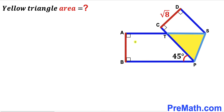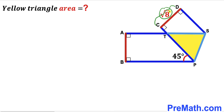Welcome to pre-math. In this video we have got a rectangle ABCD that has been folded at line PS, such that angle BPT is 45 degrees and the width of this rectangle CD has been given as square root of 8 units. Our task is to calculate the area of the yellow shaded triangle PST.